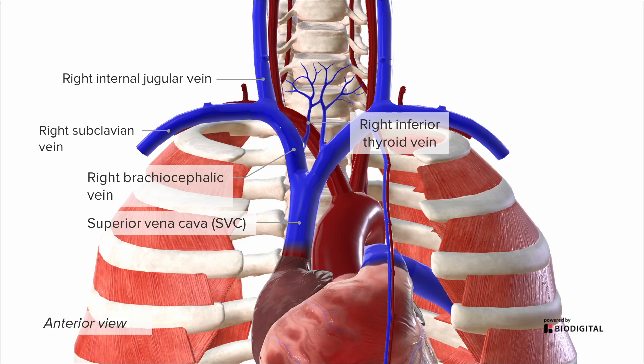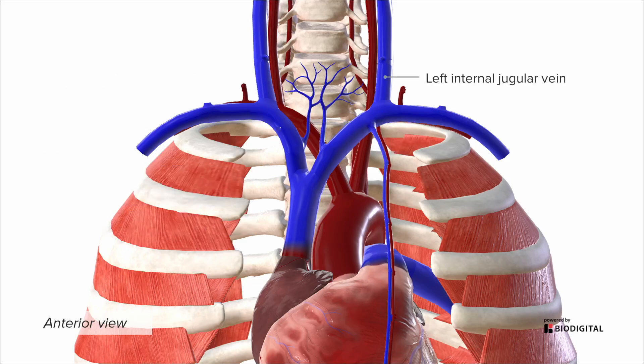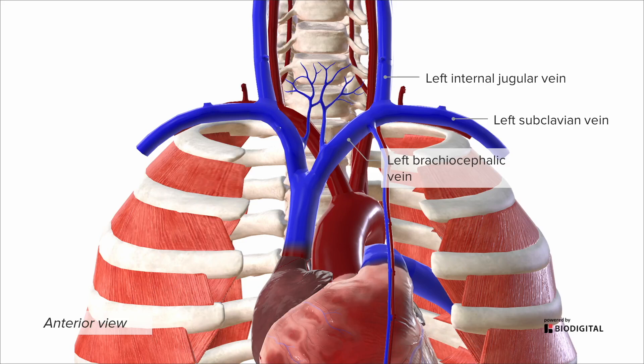Similarly, on the left side we have a left internal jugular vein and a left subclavian vein, and they'll form the left brachiocephalic vein, which is quite a bit longer than the right because it has to cross over the midline to reach the SVC on the right side of the heart. It also tends to receive the inferior thyroid veins on that side before joining the SVC.